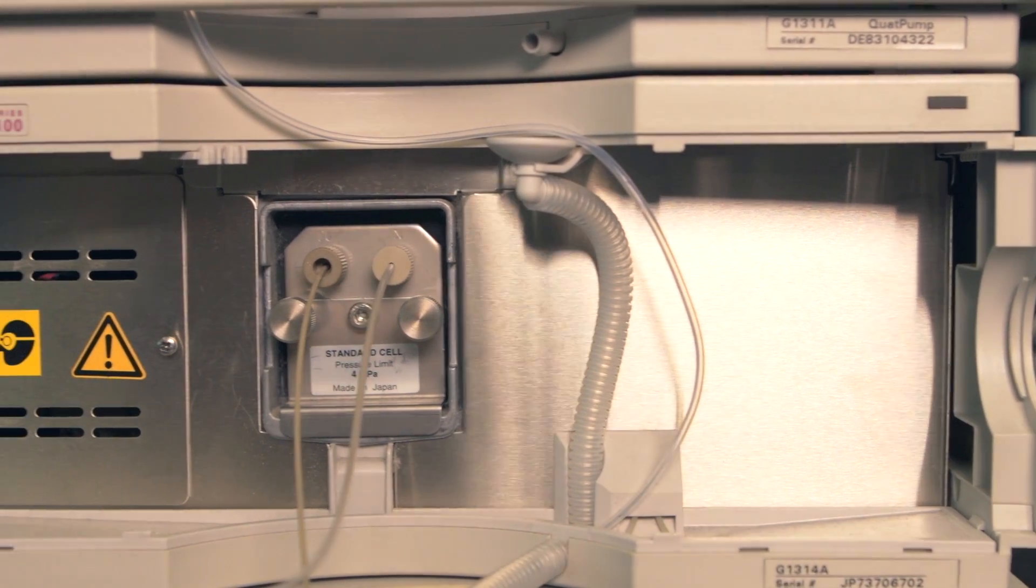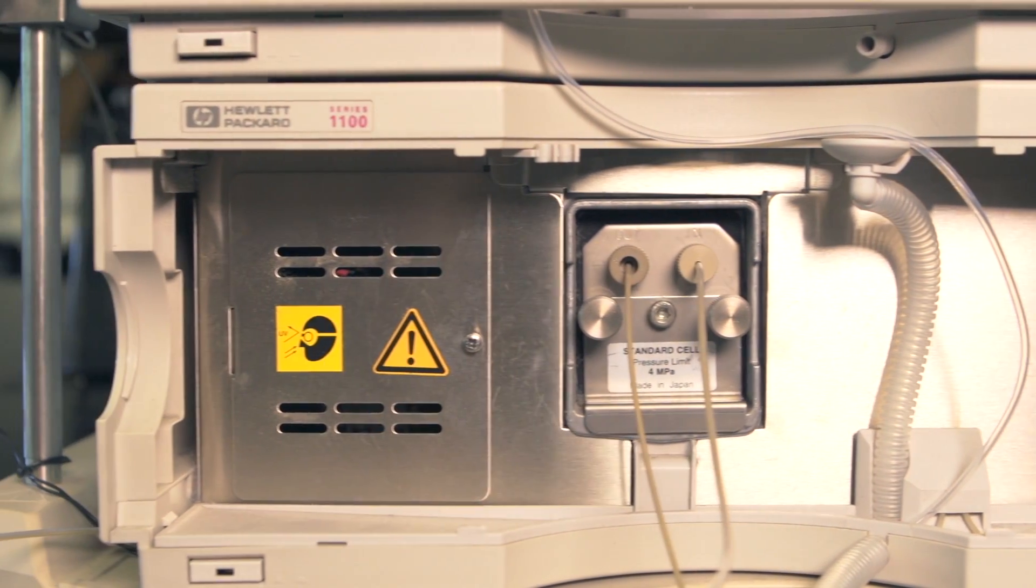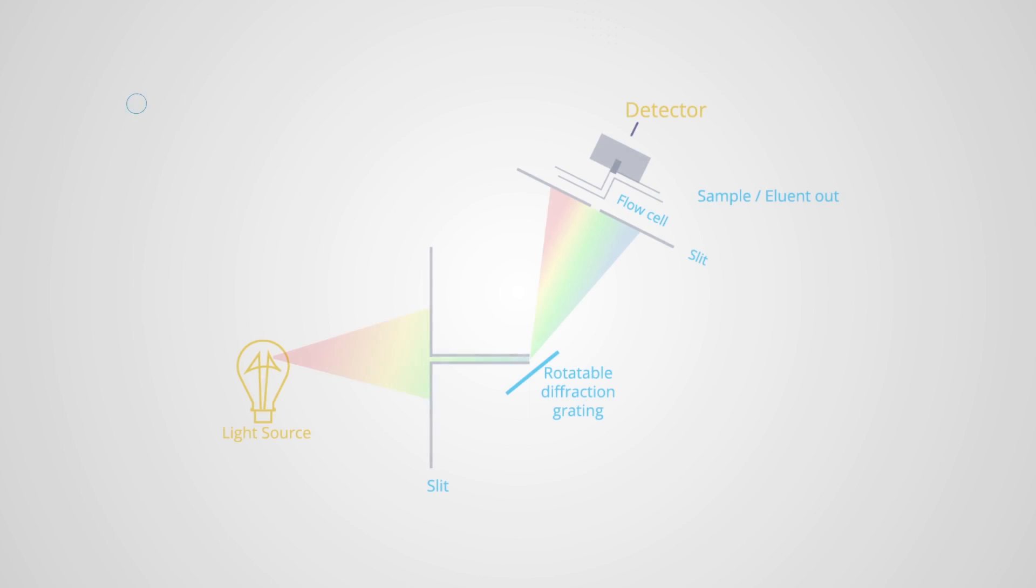With each component now hopefully separated from the others, they make their way to the detector module, which measures the properties of the column effluent as a function of time to generate a chromatogram. The detector module in this instrument consists of a deuterium lamp, flow cell, and a variable wavelength UV absorbance detector.